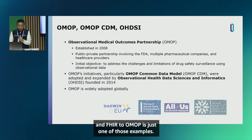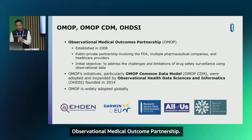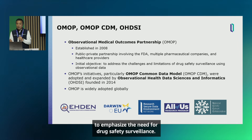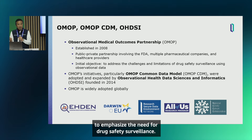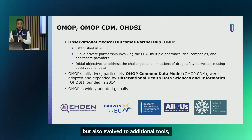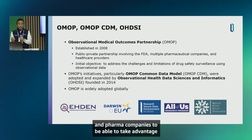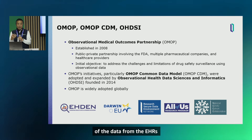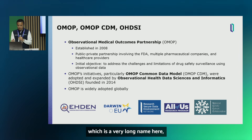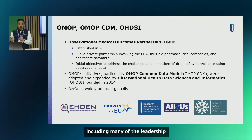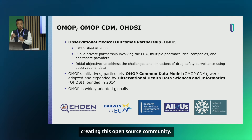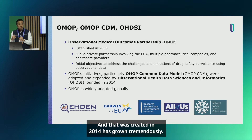OMOP stands for Observational Medical Outcomes Partnership. It started back in 2008 with the FDA and large global pharma to emphasize the need for drug safety surveillance, and quickly evolved into a global standard. It started with a common data model and evolved to include additional tools helping healthcare institutions, researchers, and pharma companies take advantage of EHR data in OMOP format. The organizing body is OHDSI, which includes leadership from Columbia Medical Center in New York and was created in 2014.